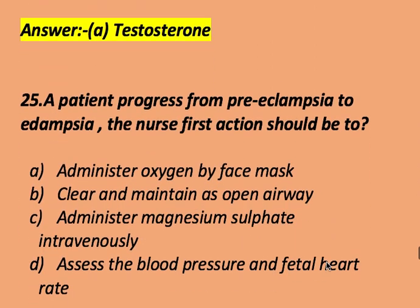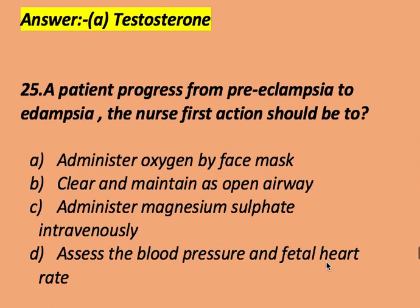A patient progresses from preeclampsia to eclampsia. The nurse's first action should be to: administer oxygen by face mask, clear and maintain an open airway, administer magnesium sulfate intravenously, or assess blood pressure and fetal heart rate. The right answer is to clear and maintain an open airway.